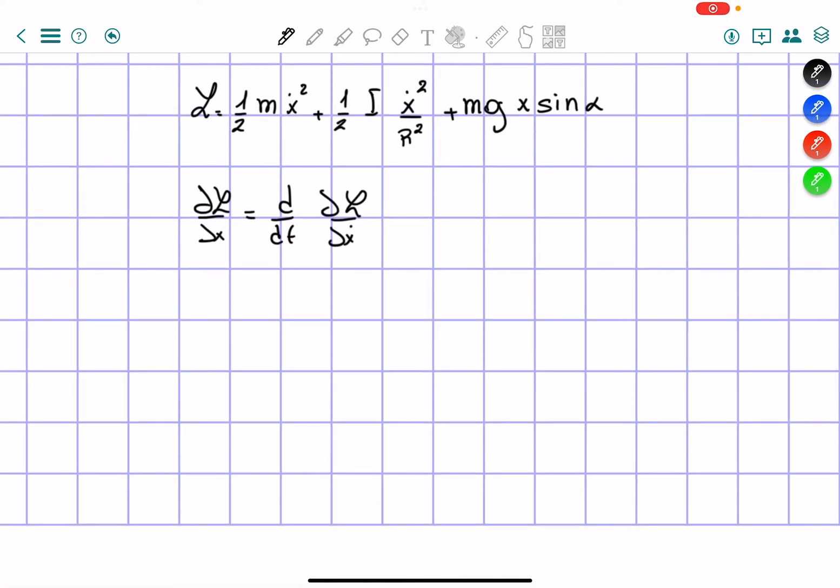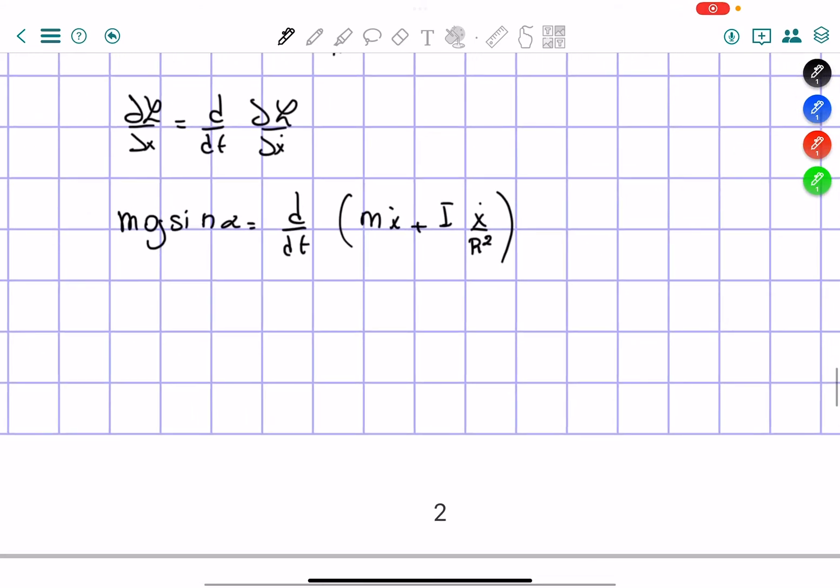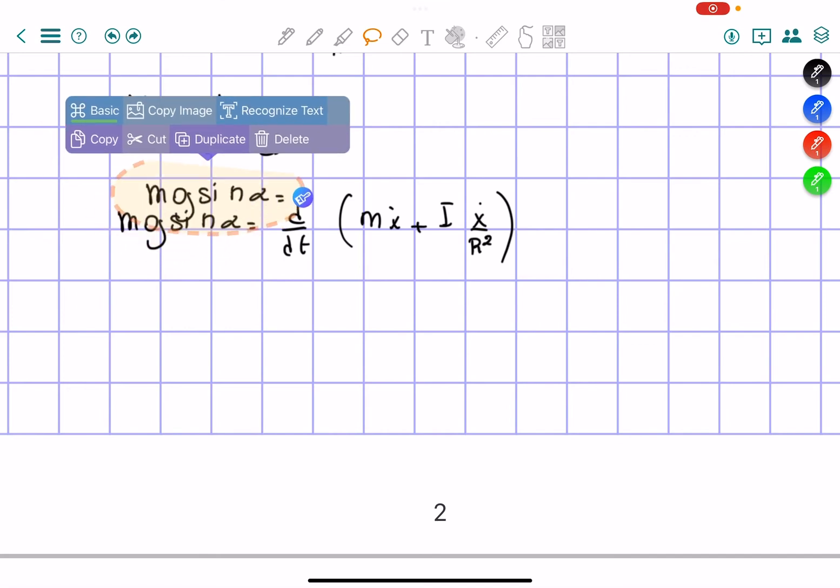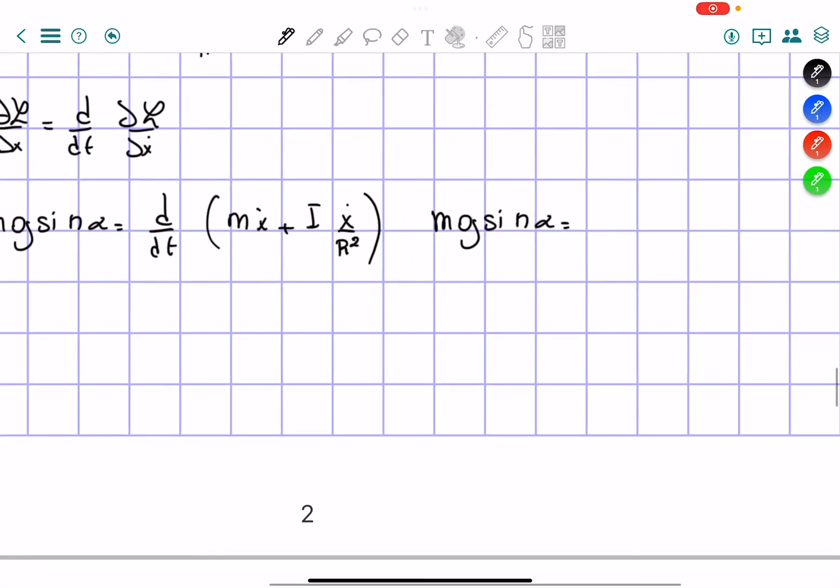From the first side we're going to get mg sine of alpha. From the second side we're going to get d/dt. The derivative of our Lagrangian in terms of x dot is going to equal m x dot plus I x dot over R squared. And now we can find the derivative in terms of time. This side is going to be m x double dot plus I x double dot over R squared.